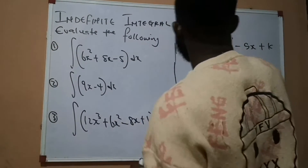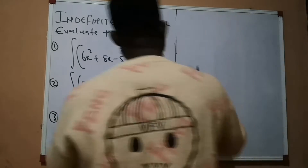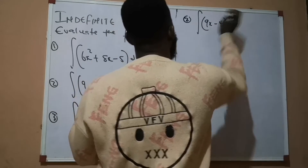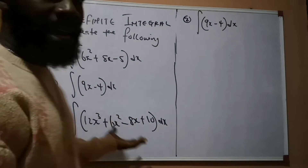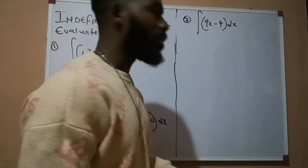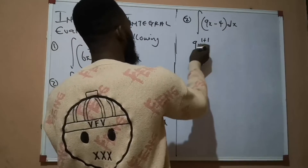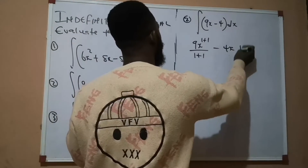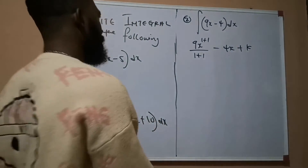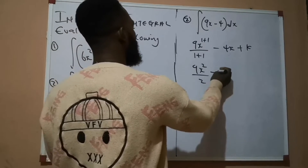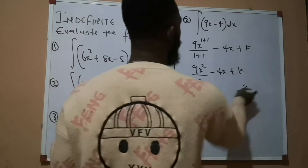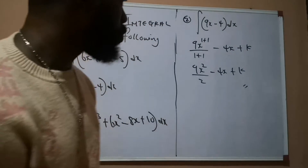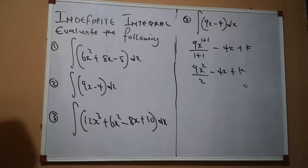Question number 2 says: integrate 9x − 4 dx. The power on x is 1, so I add 1 to it: 9x raised to power 1+1 over 1+1. Now 4 is a constant, so integrating it gives 4x. This becomes 9x² over 2 minus 4x plus k. There is no way 2 can divide 9 without a remainder, so we leave our answer in this form: 9x²/2 minus 4x plus k. That is the answer to question number 2.